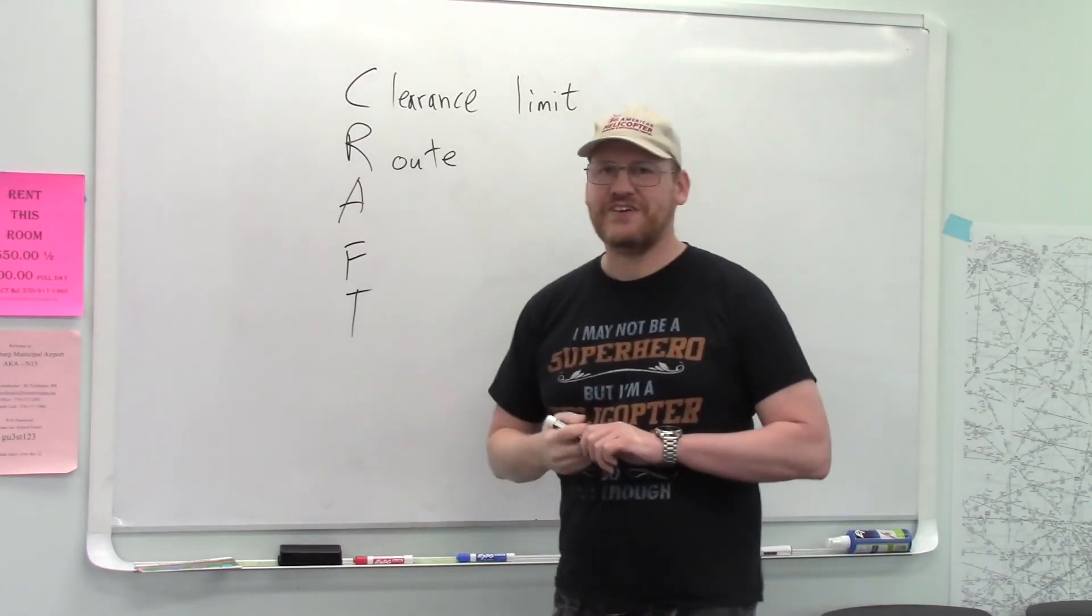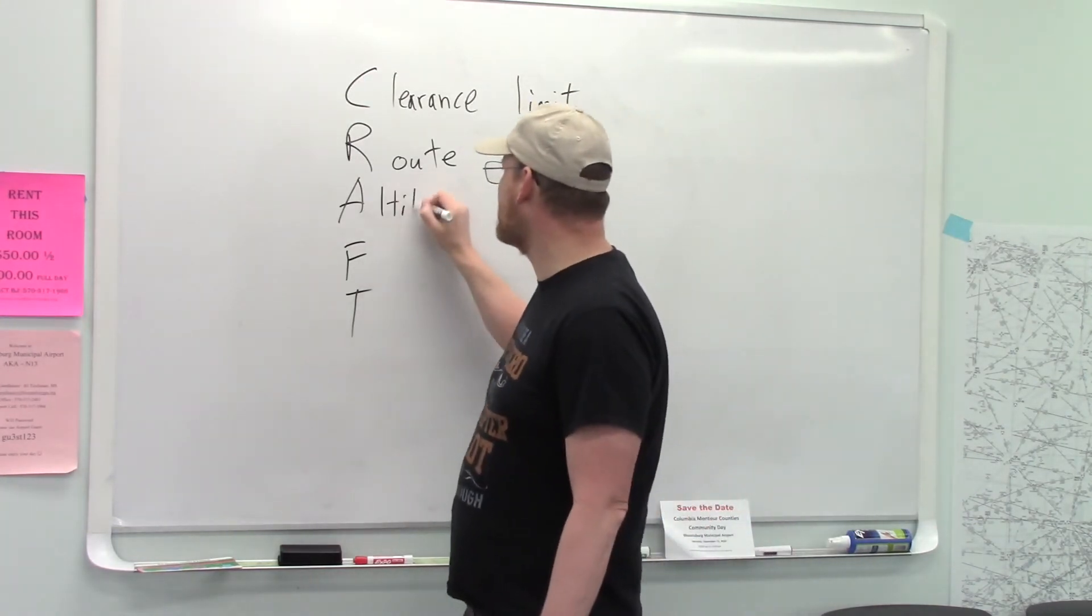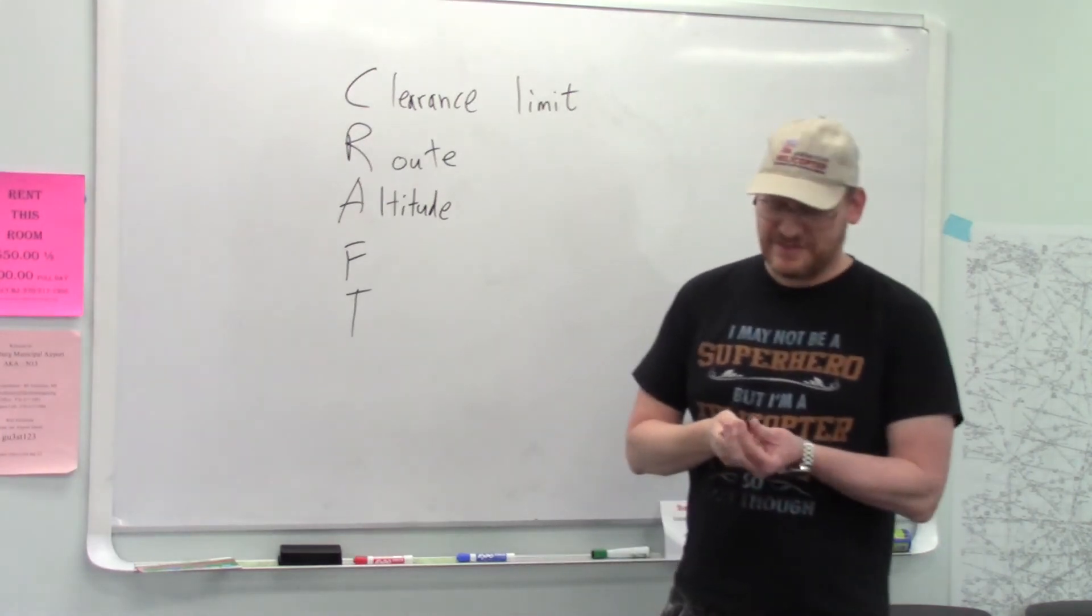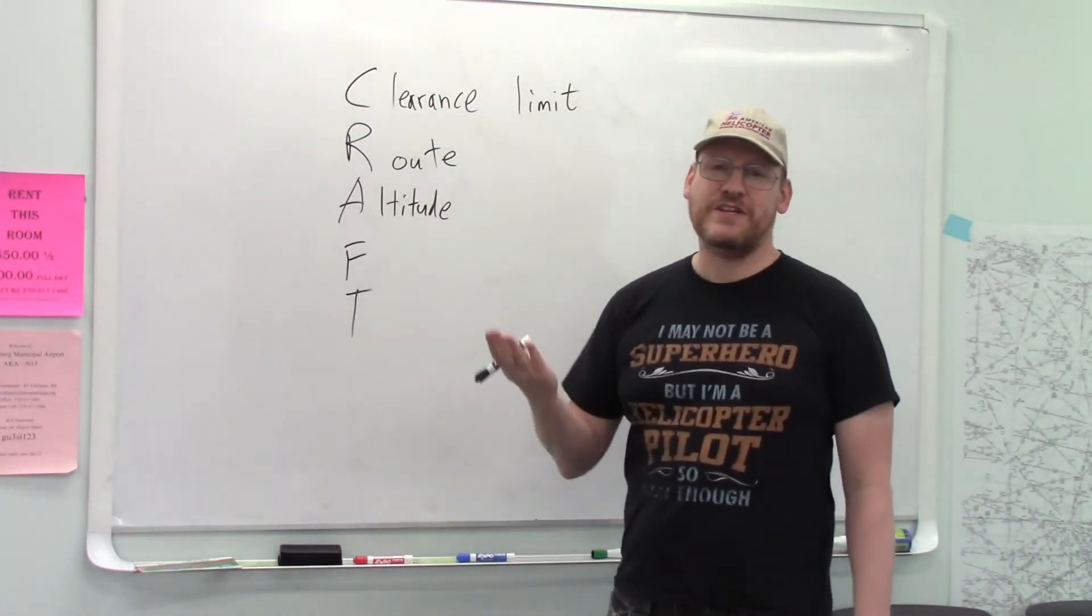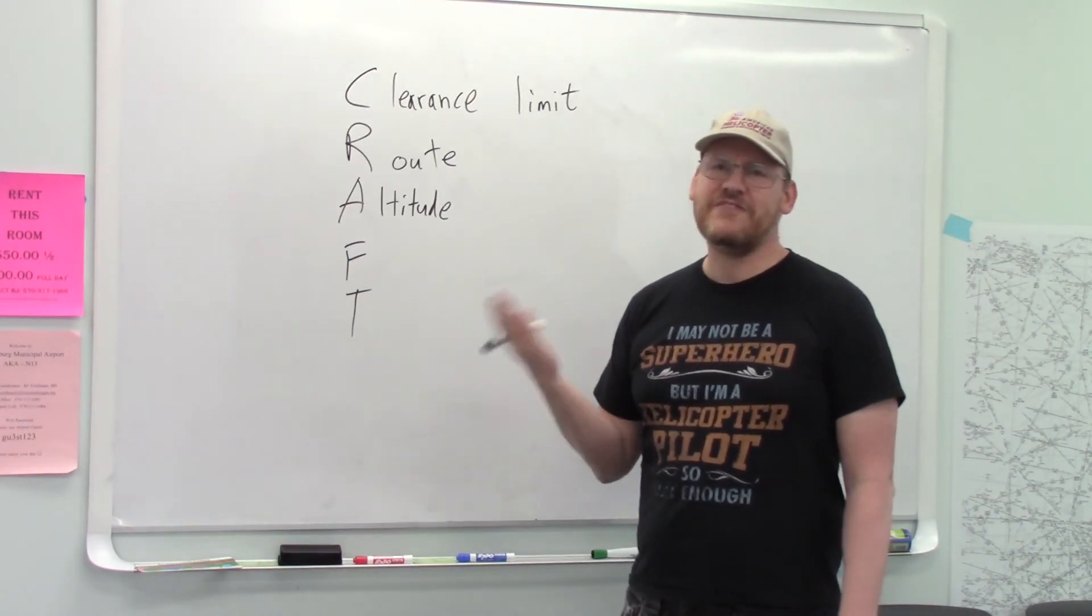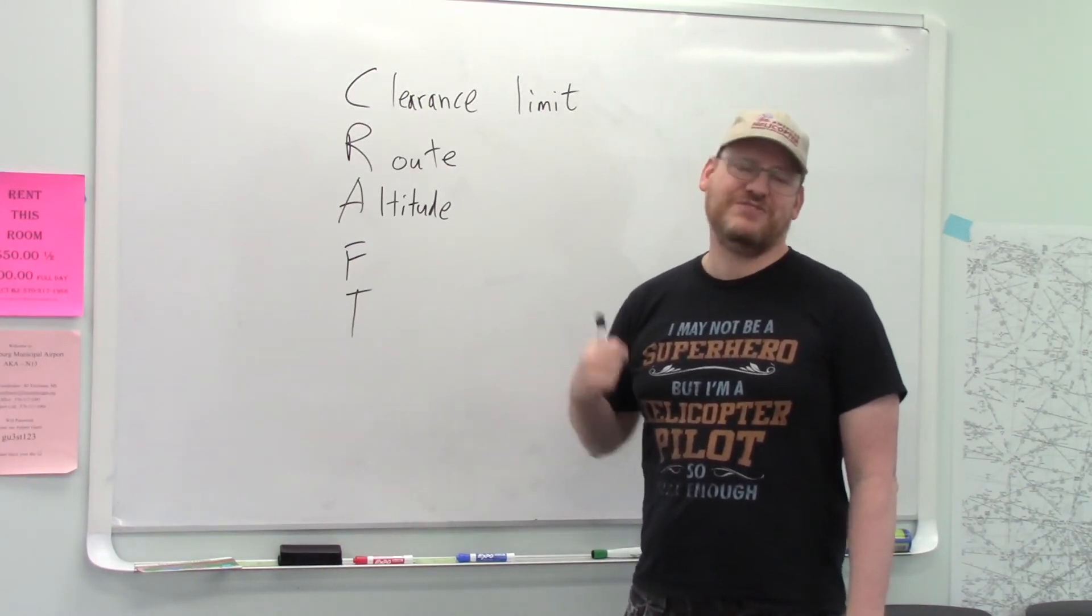Then they're going to give you your altitude. Your altitude will commonly be something like this. Maybe there's an initial fix. They'll say climb and maintain 3,000.